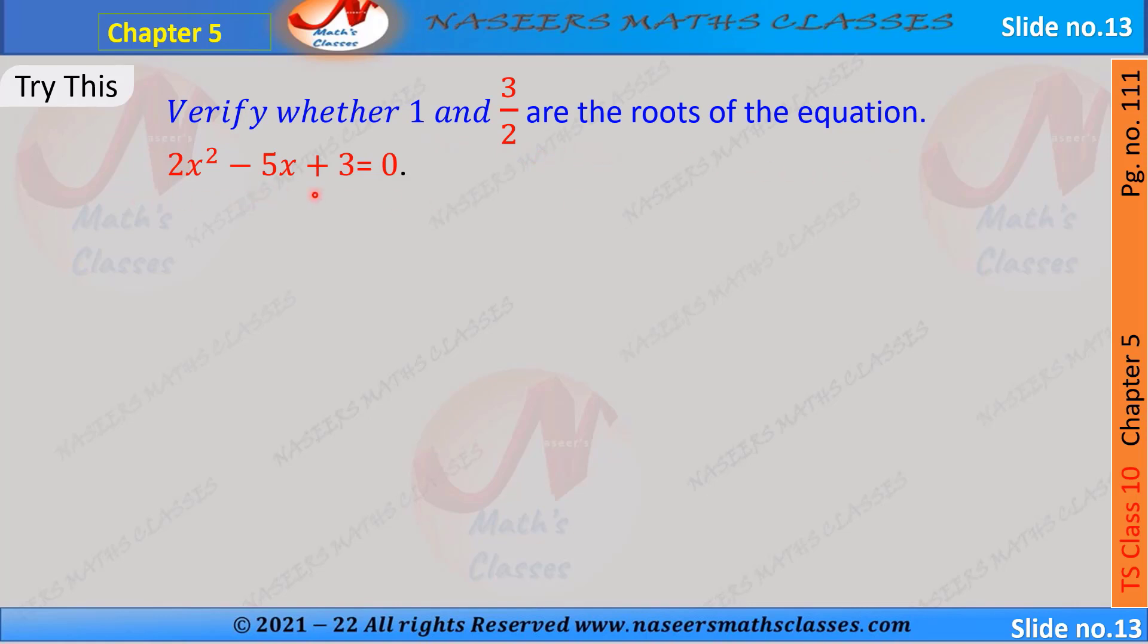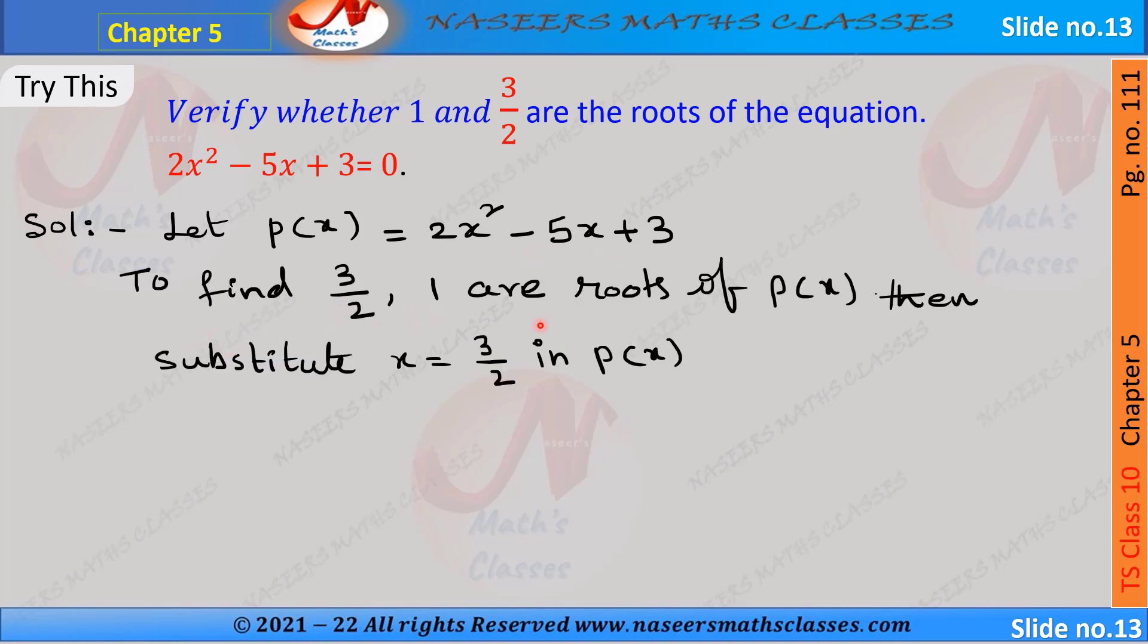2x² - 5x + 3 = 0. So let p(x) = 2x² - 5x + 3. To find if 3/2 and 1 are the roots of p(x), then first of all we substitute x = 3/2 in p(x).